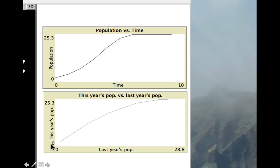And the plot of this year's population versus last year's population is no longer a straight line, because we no longer have a linear system.